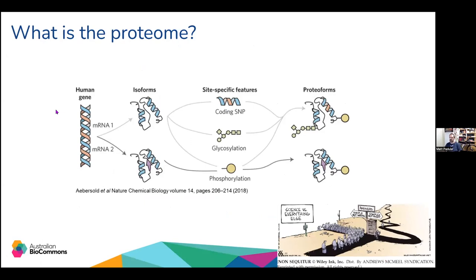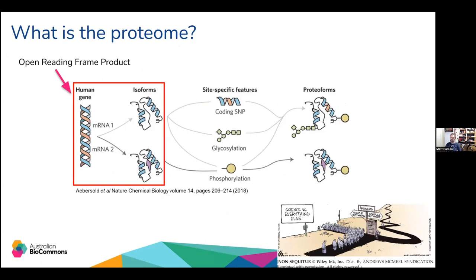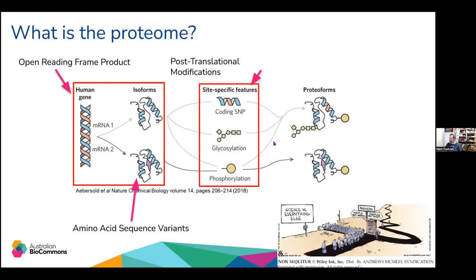First, what is the proteome? Typically, the genome is made of open reading frames — a gene is translated to mRNA that then forms distinct proteoforms. These messenger RNAs can be modified from the parent gene to generate new isoforms. The amino acid sequence produced by the ribosome can then be subjected to post-translational modifications such as cleavage, phosphorylation, and glycosylation, to produce these final mature proteoforms, which can differ substantially from the original open reading frame product.